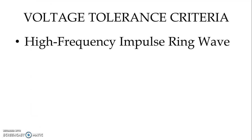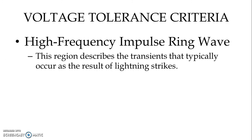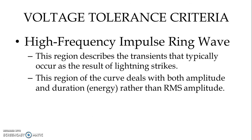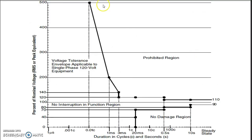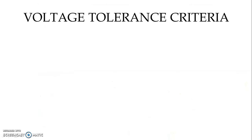Similarly, we have the high frequency impulse ring wave. This region describes transients that typically occur as a result of lightning strikes. This region of the curve deals with both amplitude and duration — energy is defined by amplitude as well as duration rather than RMS amplitude alone. This indicates impulses up to 500 percent of nominal, typically caused by lightning strikes, but duration is very important.